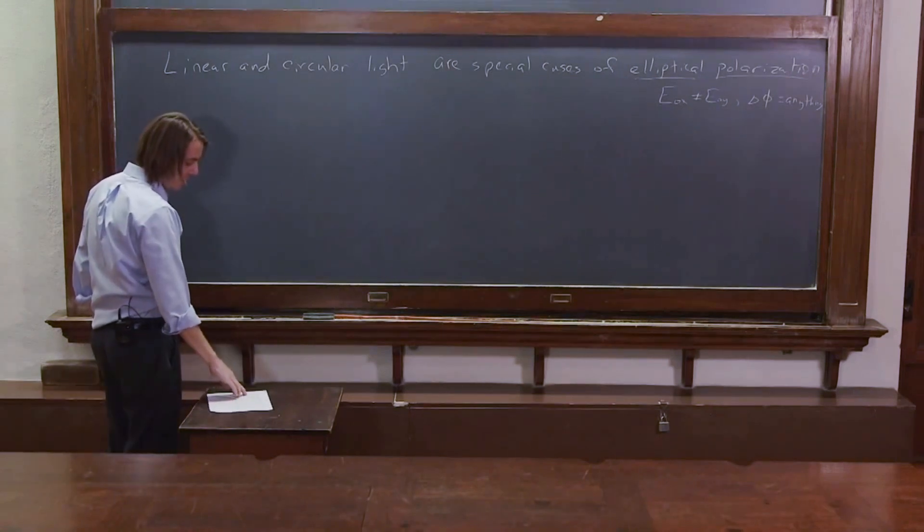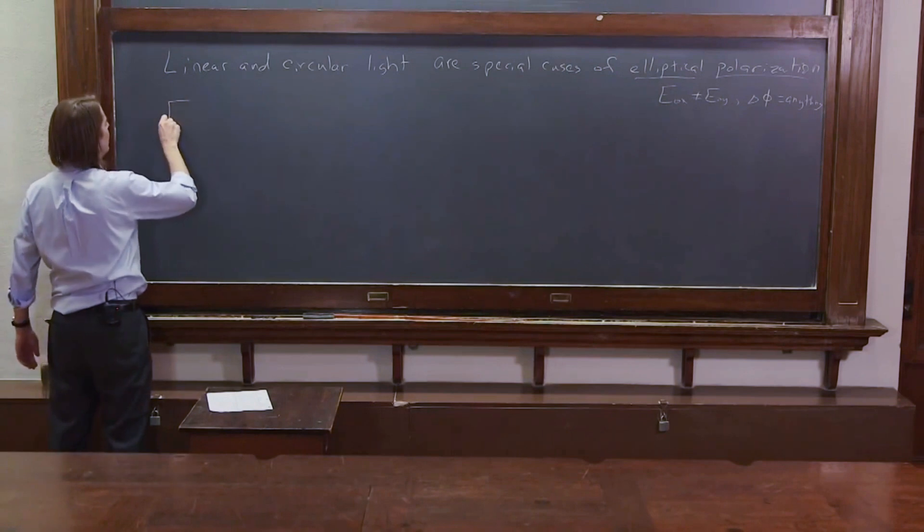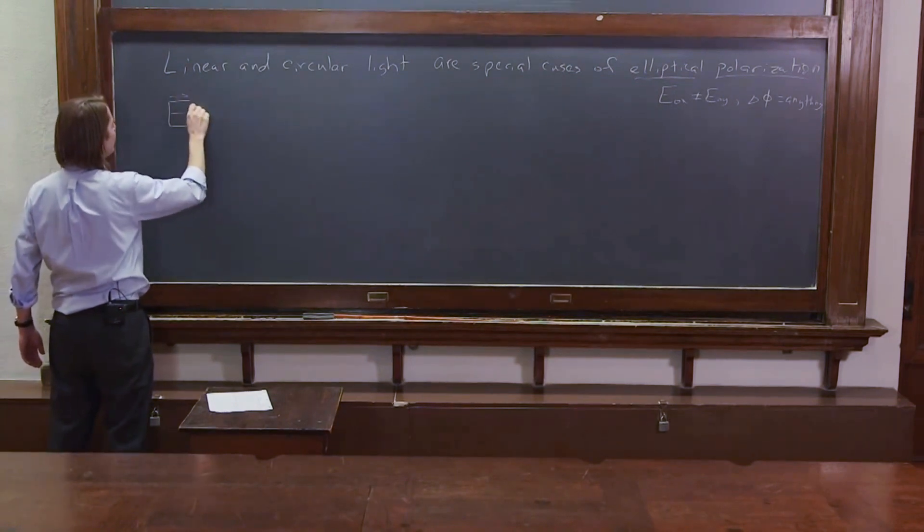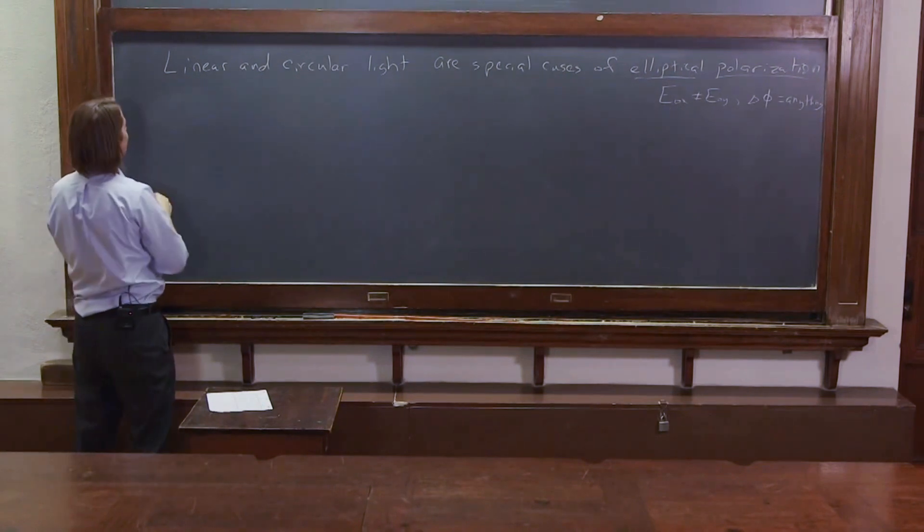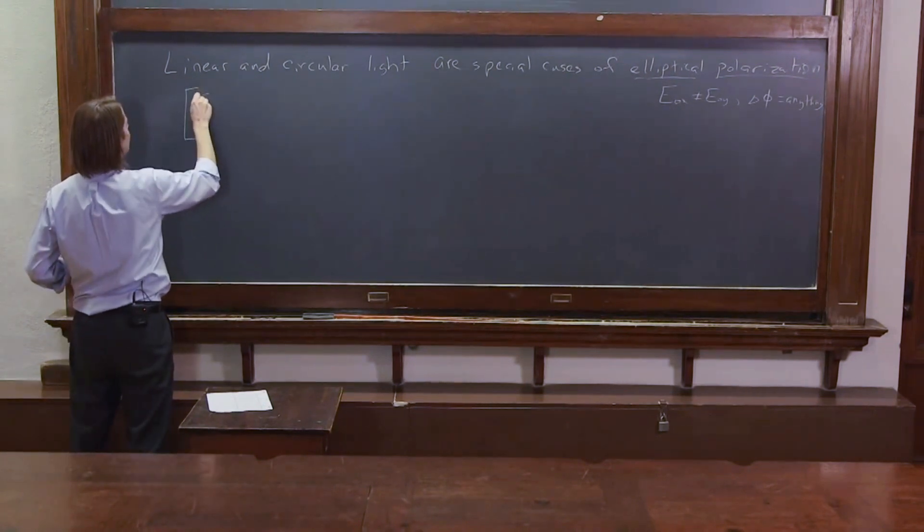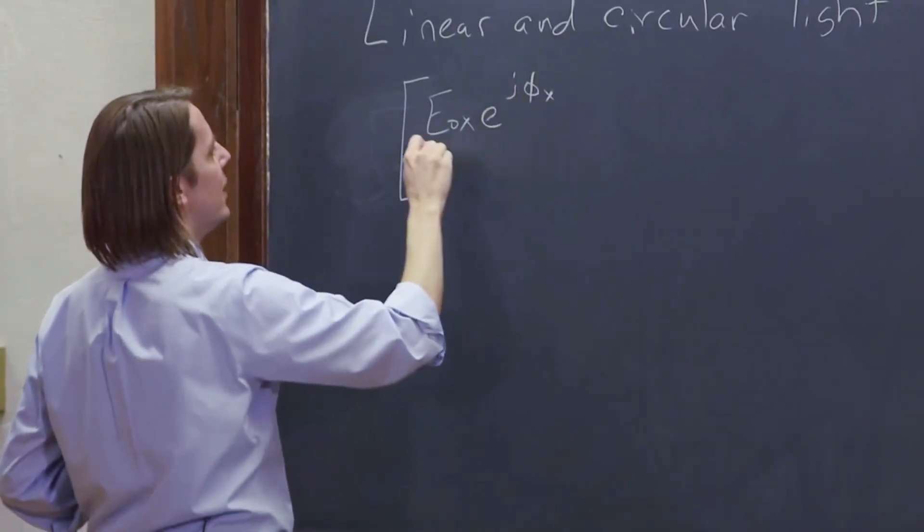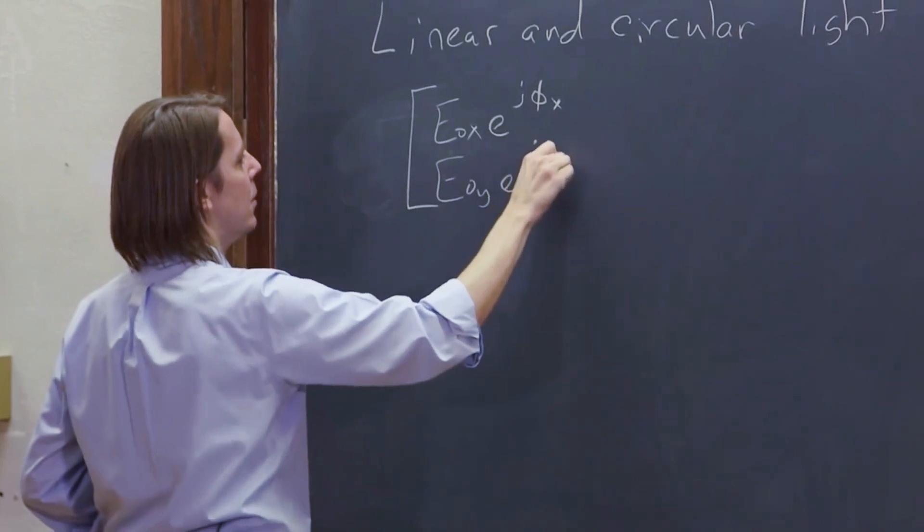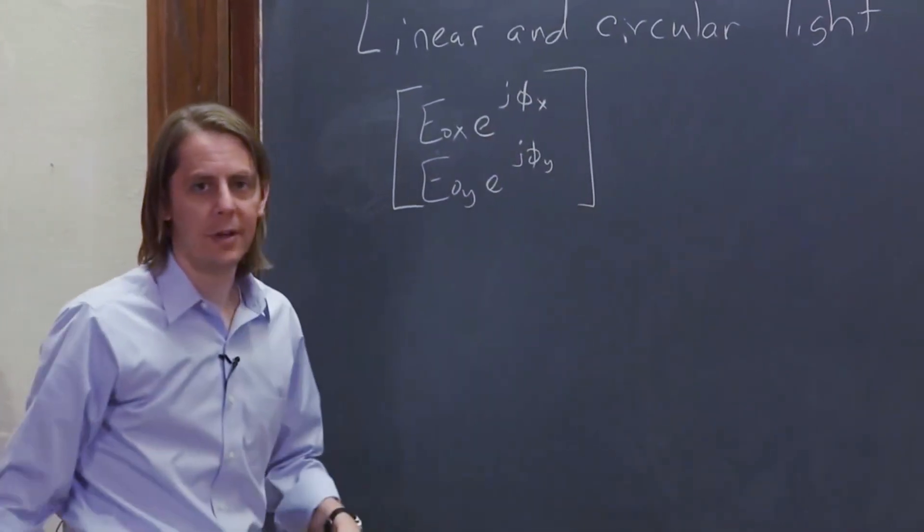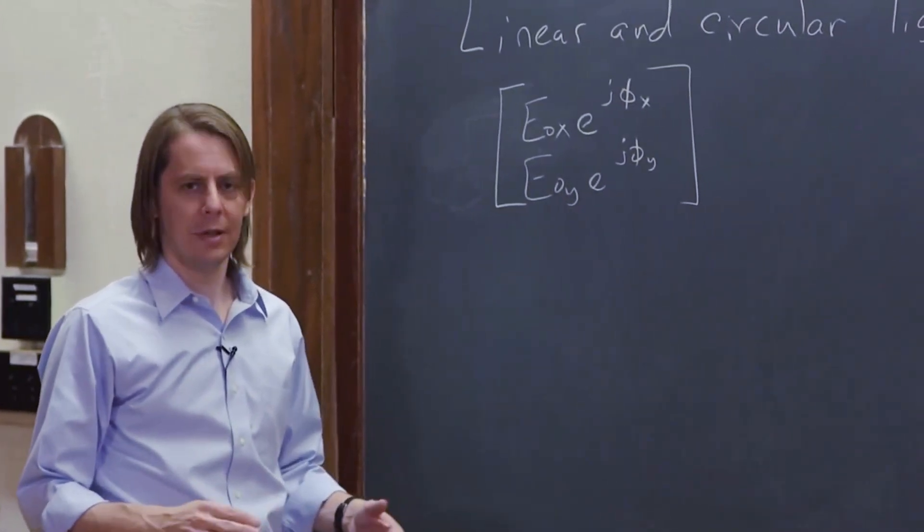So let's write the Jones vector for elliptical polarization. Well it's easy to write the Jones vector, you just include everything. So it's going to be E naught X E to the J Phi X over E naught Y E to the J Phi Y like that. So that's a big ugly complicated thing.